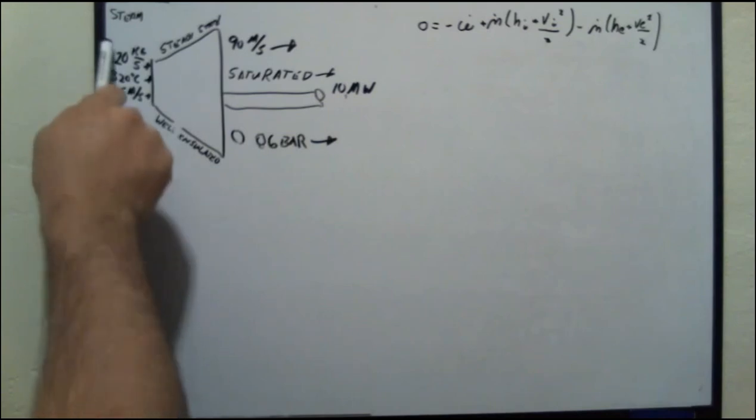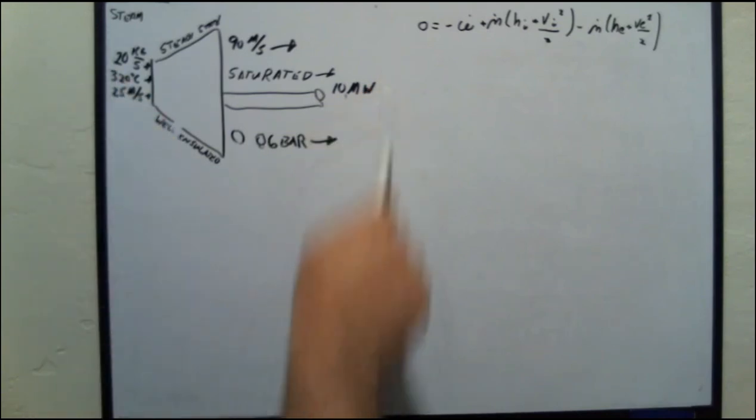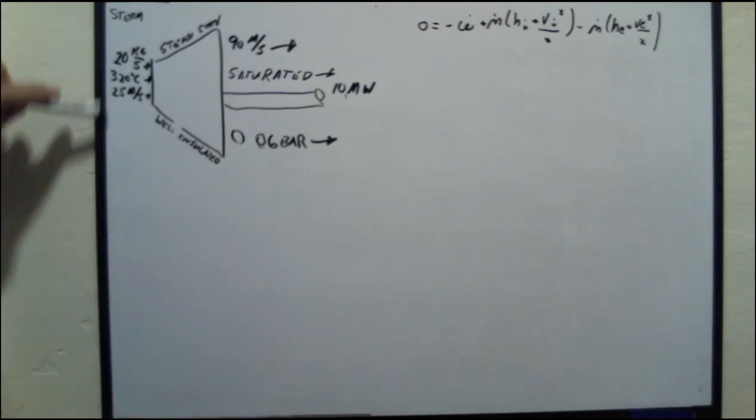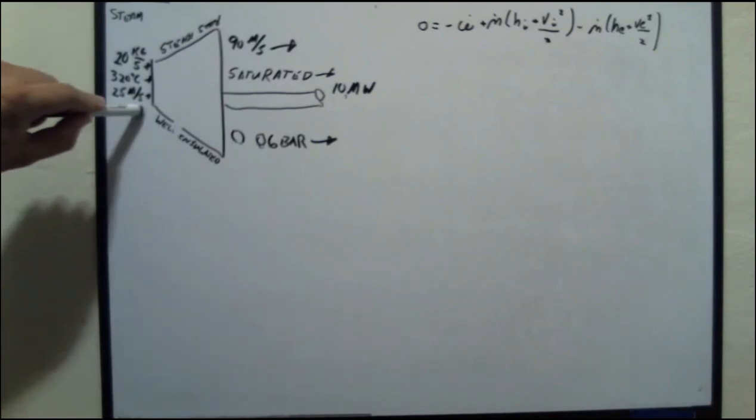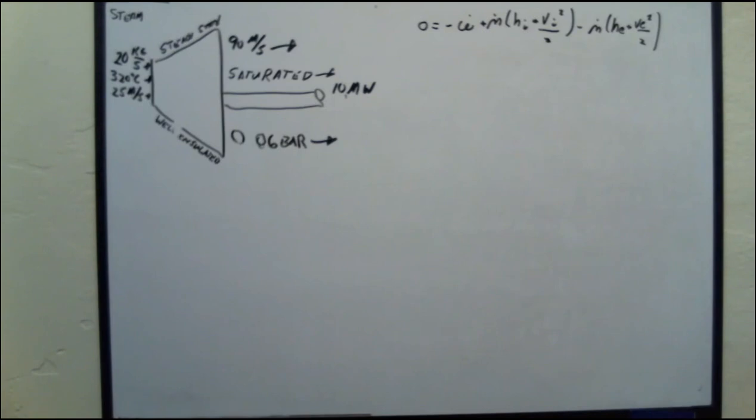So I look right here, and I look right here, and I know that saturated water at a pressure means that it is a fixed state. Over here, I have a temperature, and then I just have mass flow rate and a velocity, but I can't fix the state with that. So in order to solve the problem, I'm going to have to know how to fix this state.